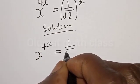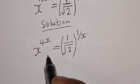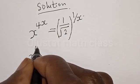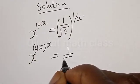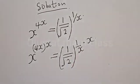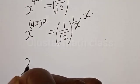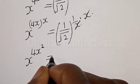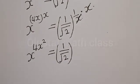Solution. We have the given equation x raised to power 4x is equal to 1 divided by square root of 2, raised to power 1 divided by x. Let's multiply the exponent of both sides by x. Then we have x raised to power 4x multiplied by x is equal to 1 divided by square root of 2, raised to power 1 divided by x multiplied by x. This will cancel, giving us x raised to power 4x squared.